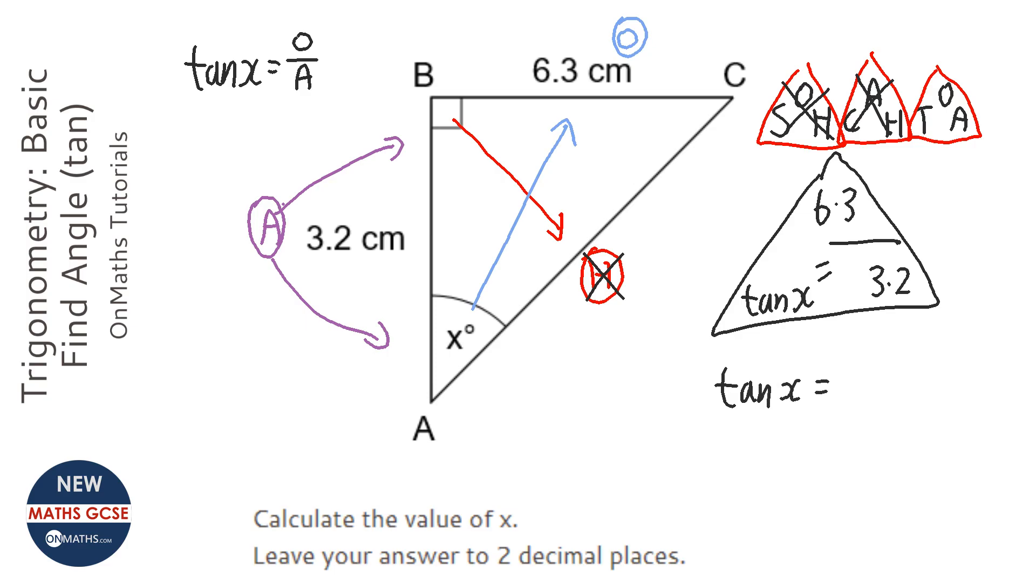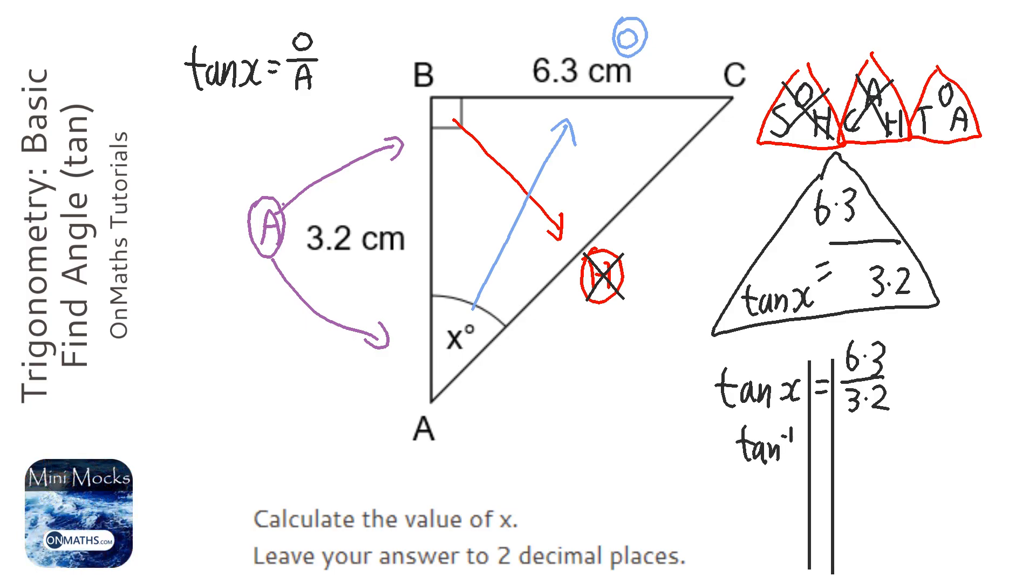The problem is we want x, not tan x. The way to solve that is by doing inverse tan of both sides, so x equals inverse tan of 6.3 over 3.2.